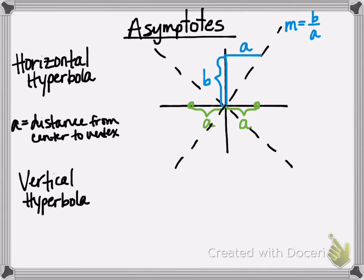And if we take a look at the other asymptote, we would be rising B, but this time we'd be going to the left a distance of A. So my other asymptote would have a slope of negative B over A. The asymptotes are always going to have opposite slopes.